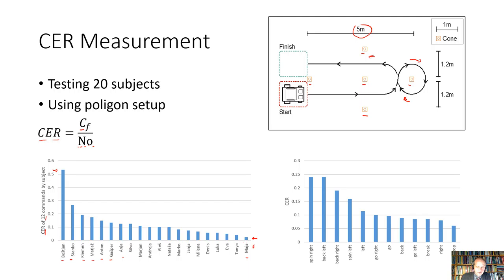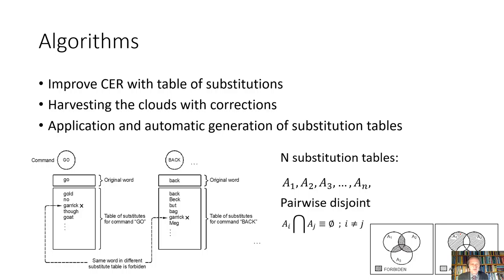If we look at the right graph, on the y-axis we can see the error rate per command. For example, spin right and spin left had the highest command error rate. And as it could be surprising, the stop command has the lowest command error rate. The stop command is certainly very important in order to stop the platform. To improve the command error rate, we used the recognized words — for example gold, know, Garrick, true, goat — as correct. By this we increased the precision of speech recognition. We did the same for back and all other commands. However, certain rules should be obeyed: the same words, for example such as Garrick, should not be in multiple substitute tables. This can be expressed as a pairwise disjoint condition — it is forbidden that elements appear in more than one region. The allowed combination is shown on the right side of the picture.